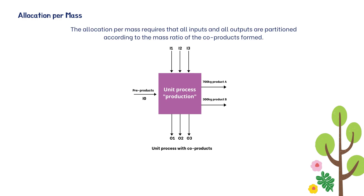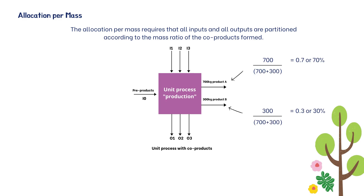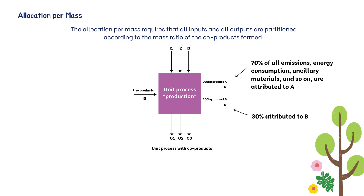Allocation per mass requires that all inputs and outputs are partitioned according to the mass ratio of the co-products formed. For example, if a unit process with two co-products A and B results in 700 kg of product A and 300 kg of product B per functional unit, then 700/(700+300) = 0.7, meaning 70% of all emissions, energy consumption, ancillary materials, and so on are attributed to A, and 30% to B.